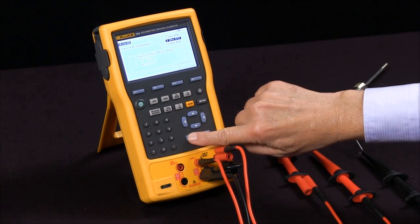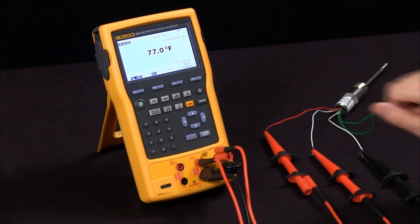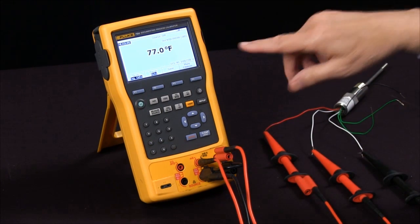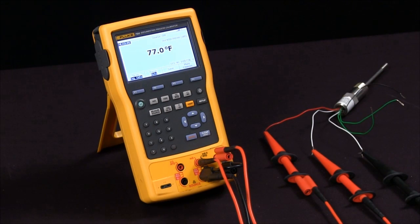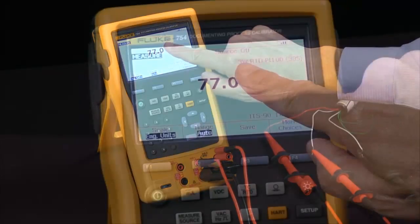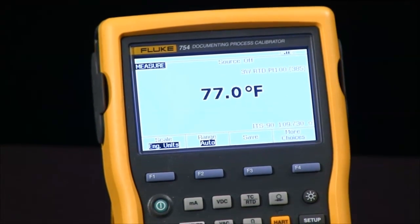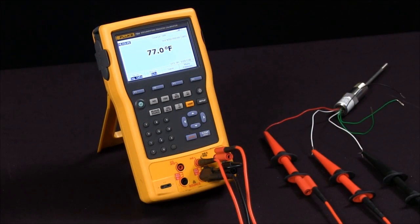I select 3 wire and it goes in the measure screen and it measures the RTD that's measuring room temperature here at 77 degrees Fahrenheit. You see on the screen it says 3 wire RTD, platinum 100 ohm, 385. And that's how we measure an RTD.